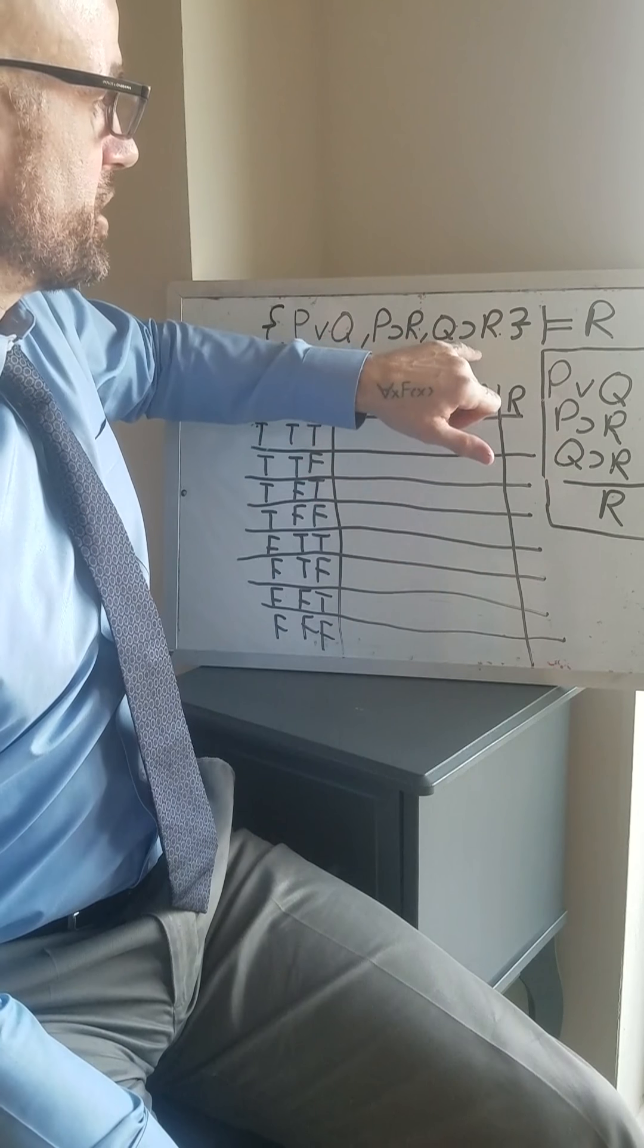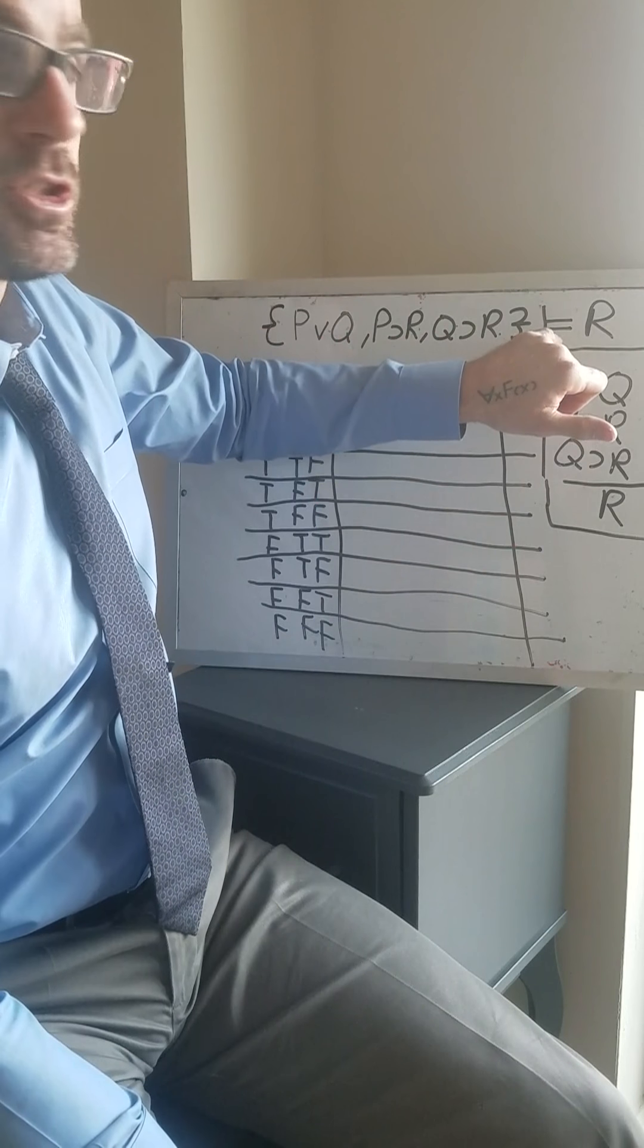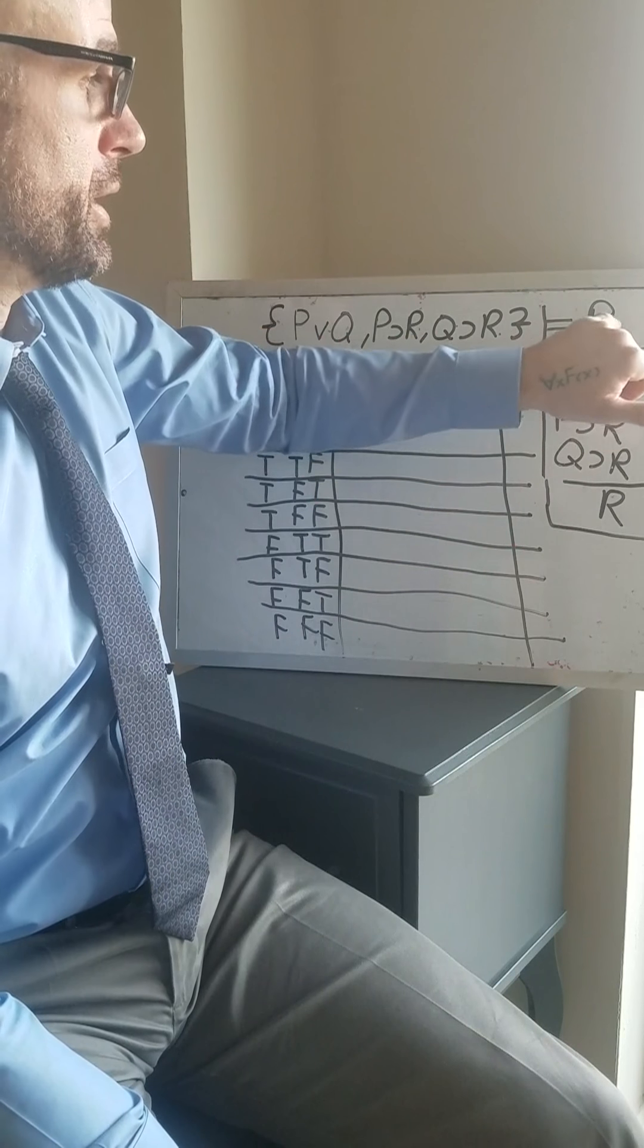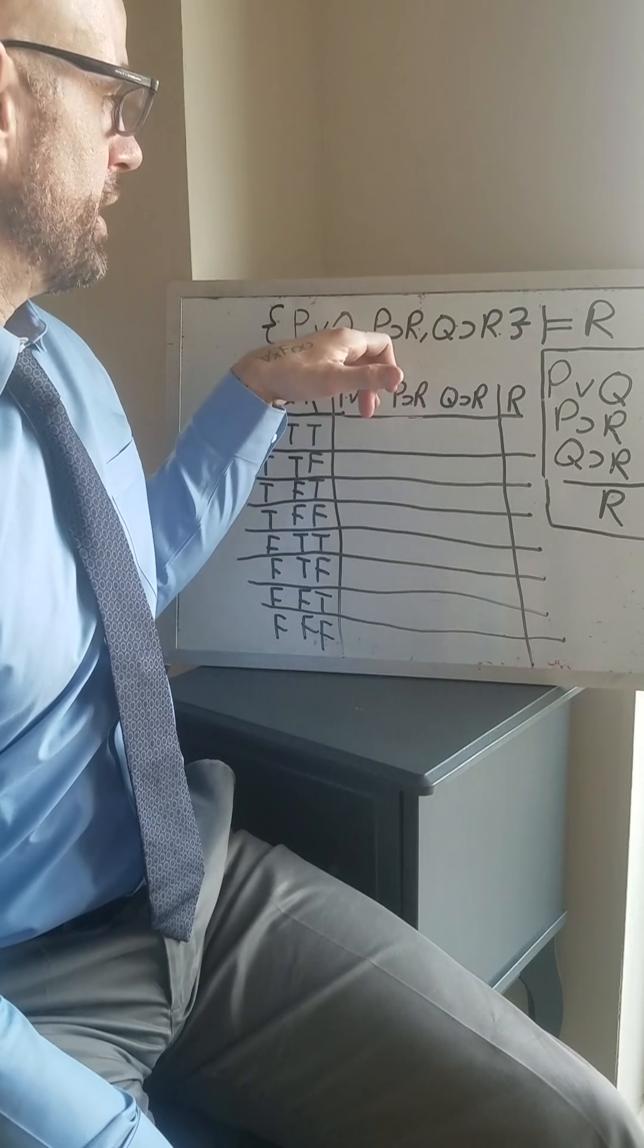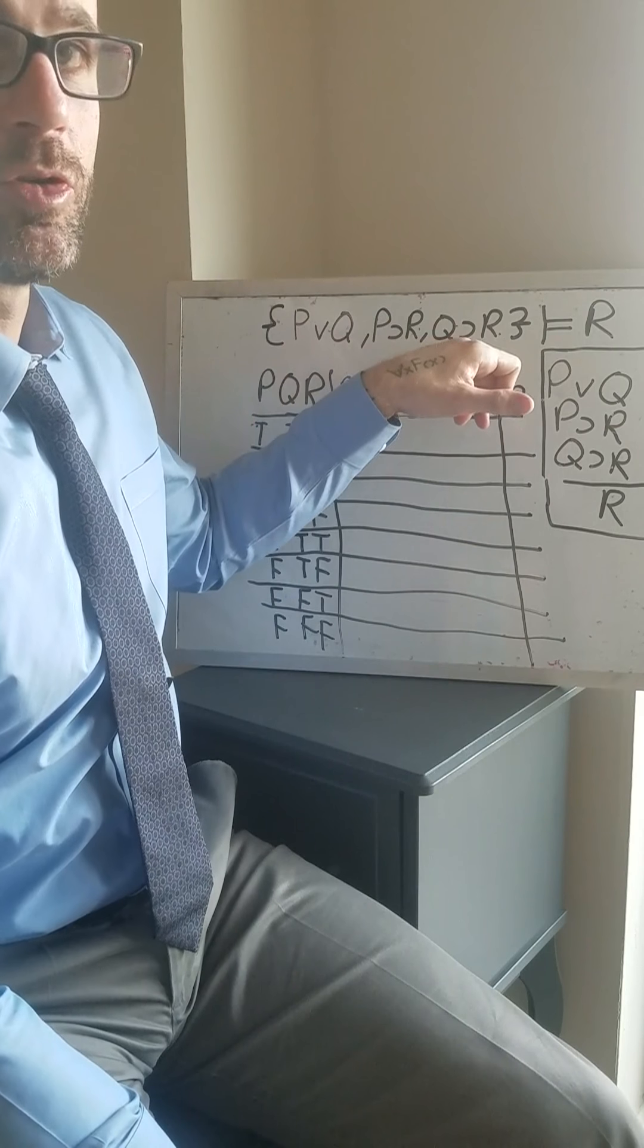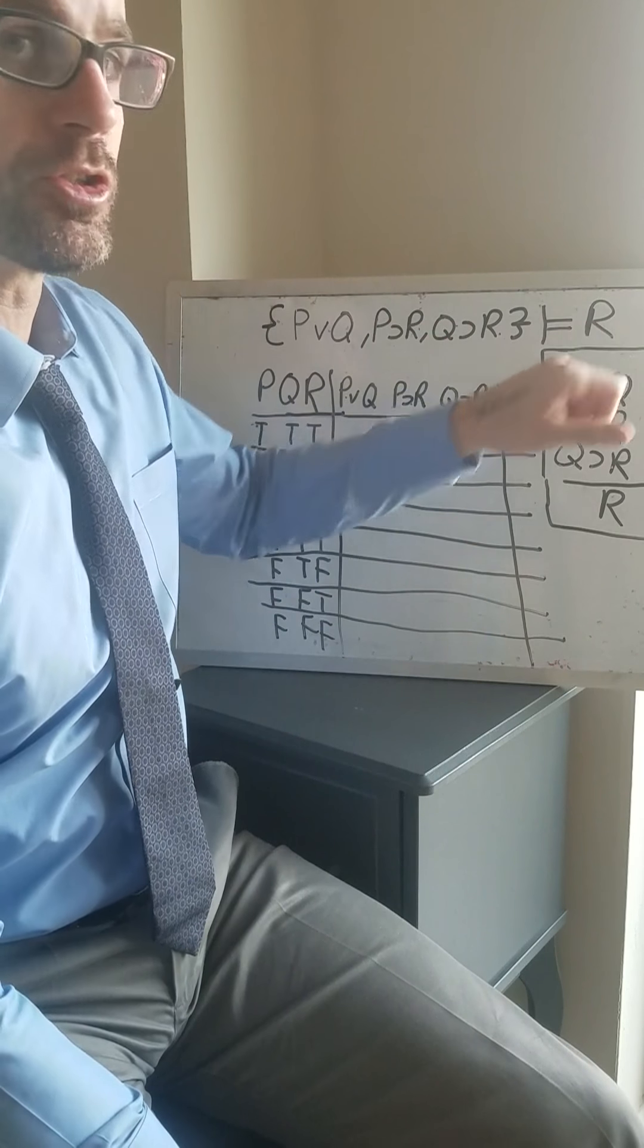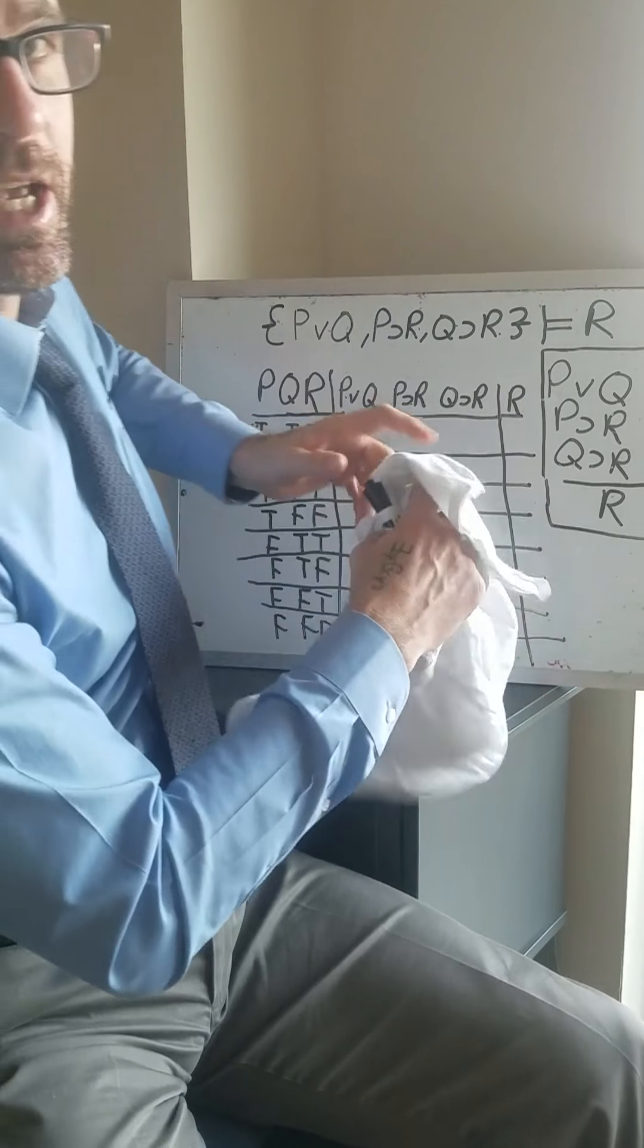Now saying that this argument is valid is the same as saying that this set of sentences, which are all the premises together, entails—this is an entailment symbol—entails the conclusion. And again, that means that there's no way that this set of sentences can all be true and this sentence false.